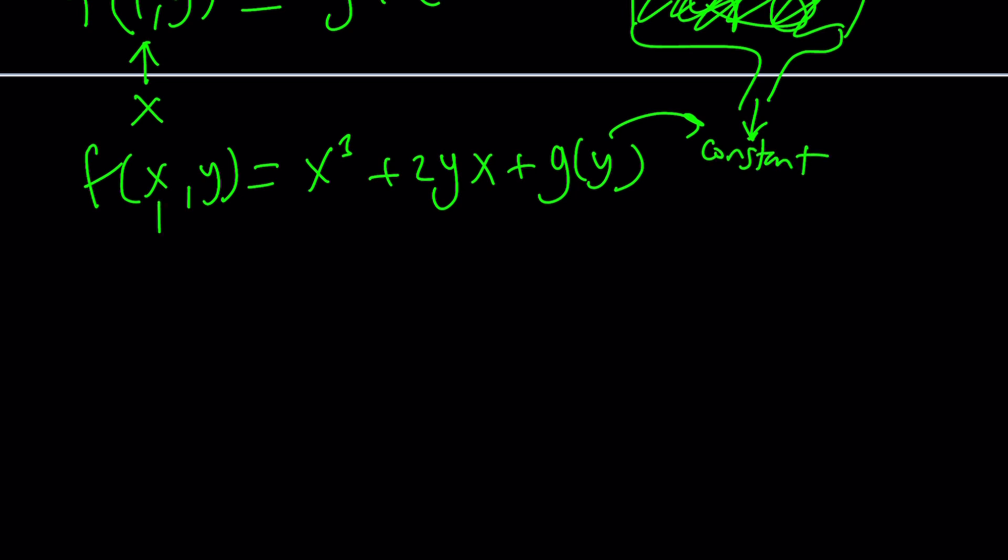So what should we do in the solution that we found? f(x, y) is x³ + 2yx + g(y). Remember, g(y) is a function of y, which is considered a constant with respect to x. We should replace x with 1 so that we can get f(1, y). If you replace x with 1, you get 1. If you replace x with 1, you get 2y. And this just becomes g(y).